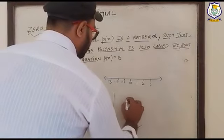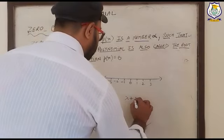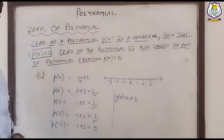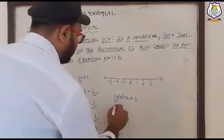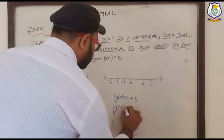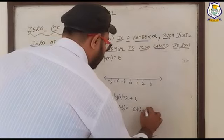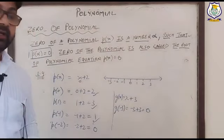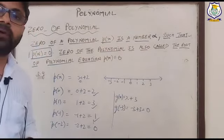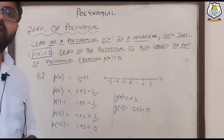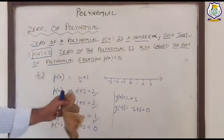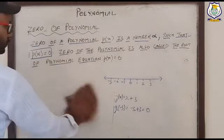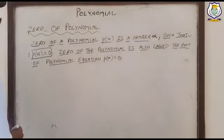For example, take polynomial g(x) equal to x plus three. Think of a value that makes the answer zero. If we put x equal to minus three: minus three plus three equals zero. So minus three is known as the zero of the polynomial, and also the root of the polynomial.